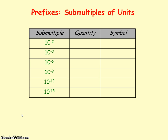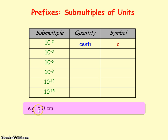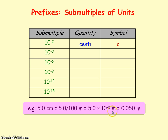Units can have powers of ten prefixes indicating multiples or submultiples of the unit. Looking at submultiples: 10 to the minus 2 represents one hundredth of a unit — this is centi, with symbol c. So if we had 5.0 centimetres and needed to convert to SI units in meters, we would divide by 100, giving 0.050 meters.